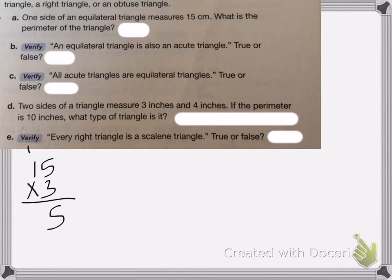3 times 5 is 15, carry my 1. 3 times 1 is 3, plus 1 is 4. So my perimeter is 45 centimeters total.